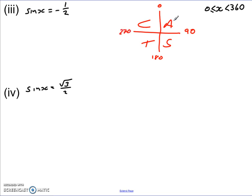Again, A means they're all positive, not there. S means sin is positive, so it's not there. So it must be in these two regions here.